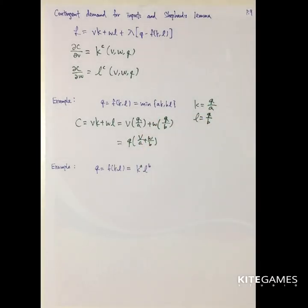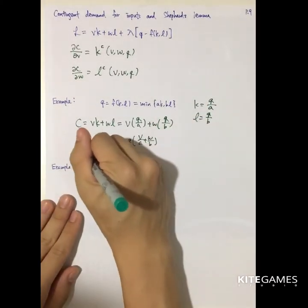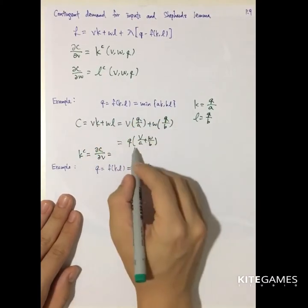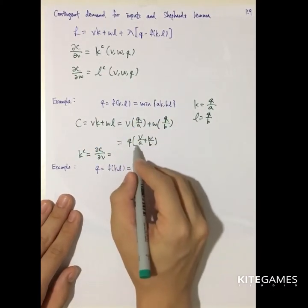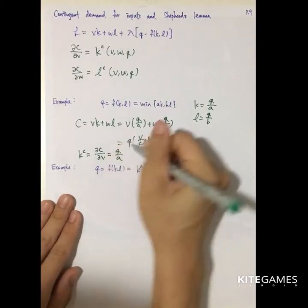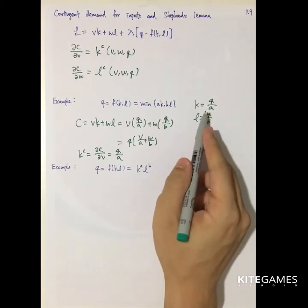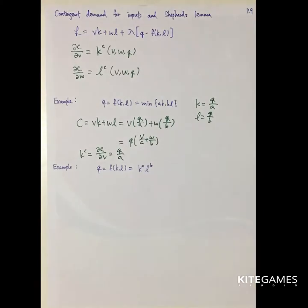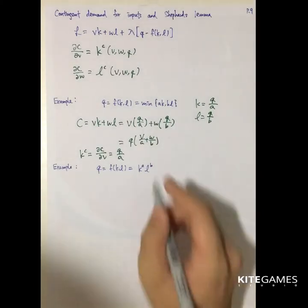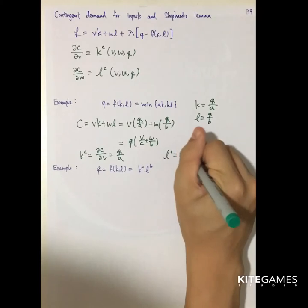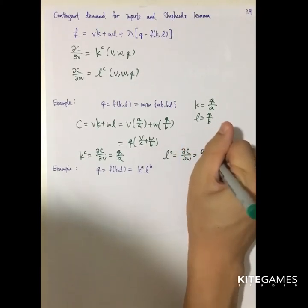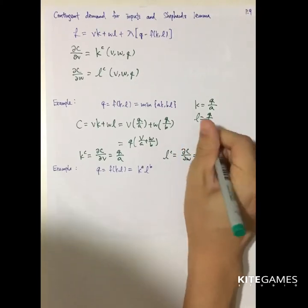If we want to find the contingent demand for capital, this equals partial C partial V. If we take partial C partial V, we get Q over A. This is exactly the amount of capital — this is the way to find the contingent demand for capital. And for labor, taking partial C partial W gives Q over B. So this is the labor demand.